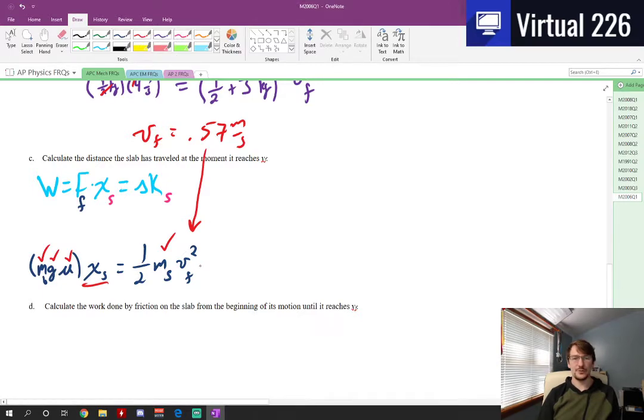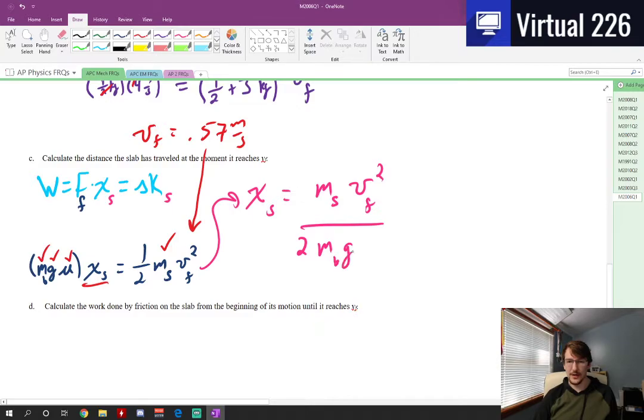If we just move around this equation, we can see that XS, the distance the slab ends up moving is going to be the mass of the slab times its final velocity squared divided by the two from the one half. So there's your one half M V squared. And then you're going to get the mass of the block gravity and the coefficient of friction. And that's all right there, the force of friction.